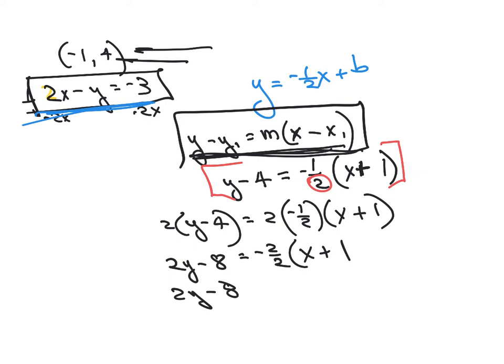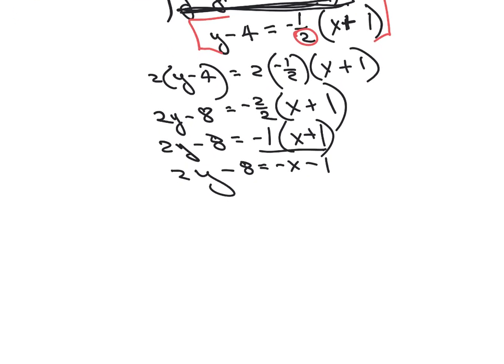So I multiply 2 times Y minus 4, and 2 times negative one-half. I don't multiply this 2 times this and then this. I just multiply it by this, just so that this side over here has one chance to have it multiplied by 2. So 2Y minus 8 equals negative 1 times X plus 1, which if we distribute that negative 1, we get that.